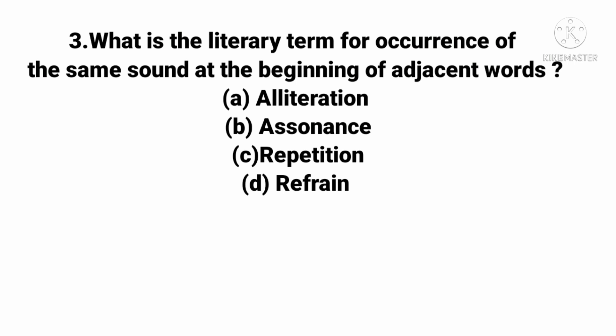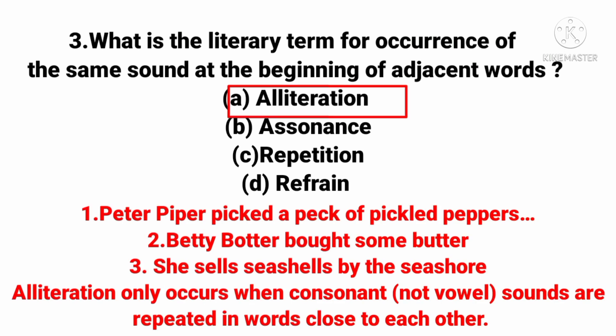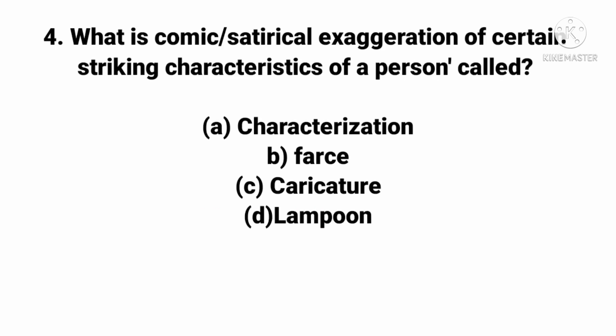The next question: What is the literary term for the occurrence of the same sound at the beginning of adjacent words? The right answer is alliteration. Alliteration means having the same sound at the beginning of words — the repetition of consonant sounds at the start of closely placed words. For example, 'Peter Piper picked a pack of pickled peppers' — the repeating sound 'p' creates alliteration.